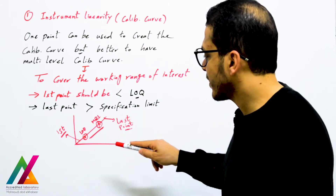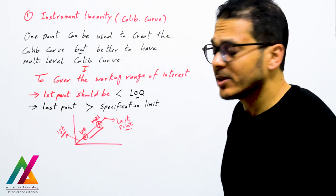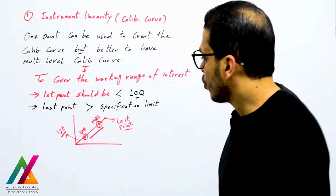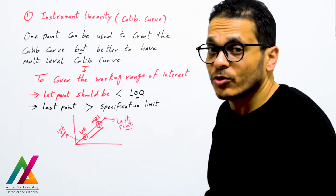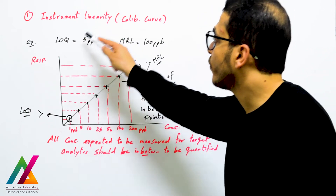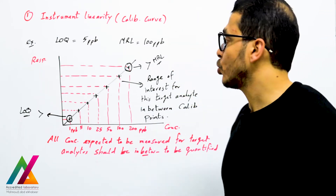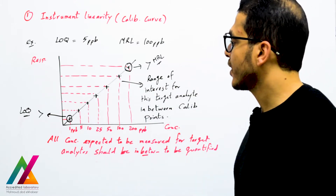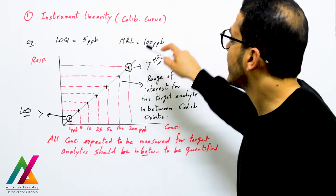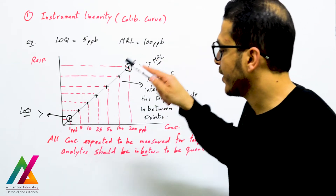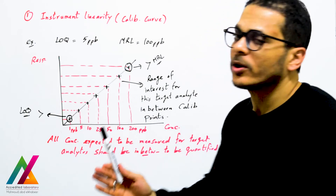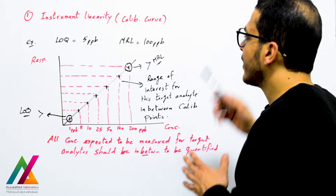For example, if the limit of quantitation or minimum reporting limit equals 5 ppb and the maximum residue limit equals 100 ppb, you would run calibration standards at 1, 5, 10, 25, 50, 100, and 200 ppb. The 1 ppb point is lower than the minimum reporting limit and 200 ppb is higher than the maximum residue limit, so the working range of interest is fully covered between calibration points.